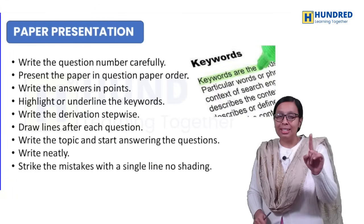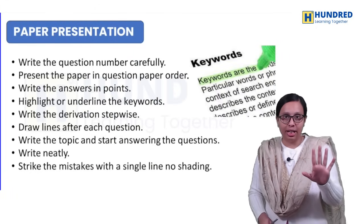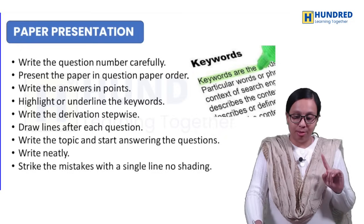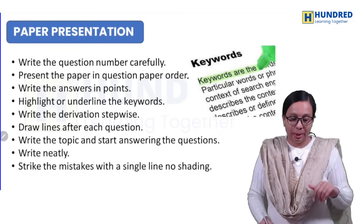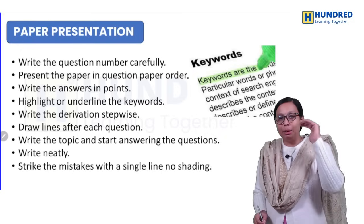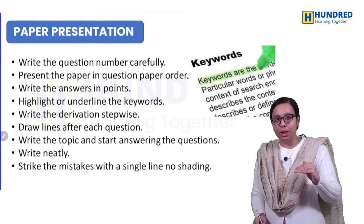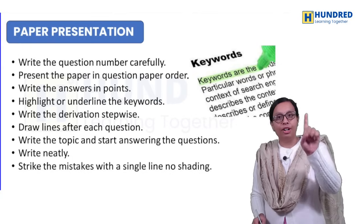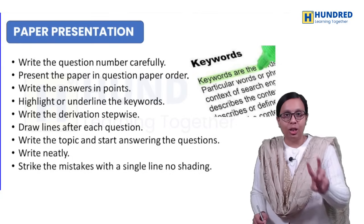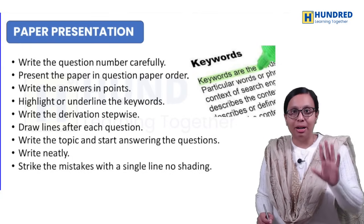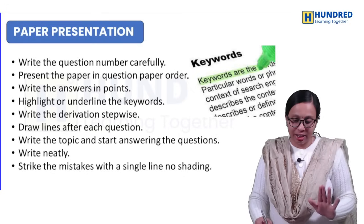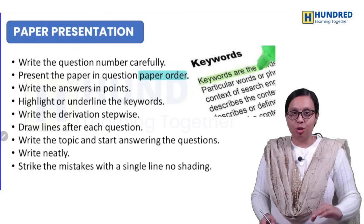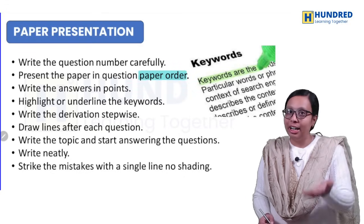First thing: question number is correct — this is very important. If we have a question paper, answer in order: first choose (1 mark), then 2 marks, then 3 marks, and then 5 marks. If you don't follow this order, we have confusion.